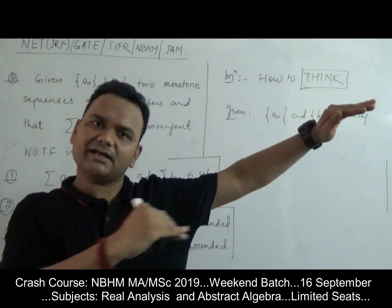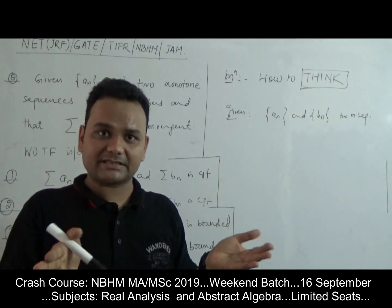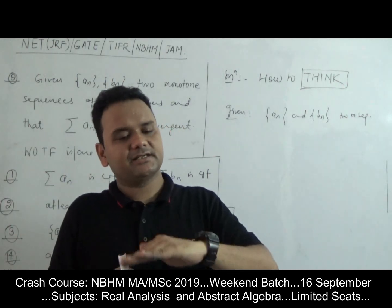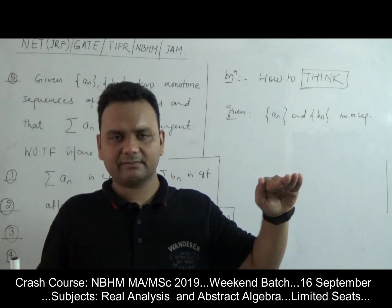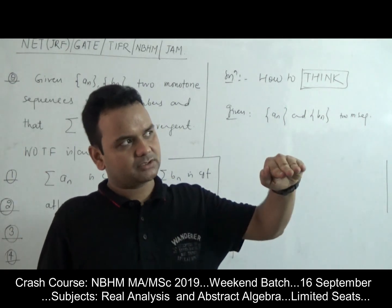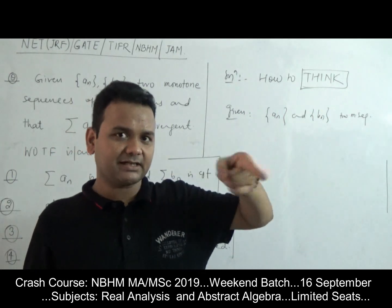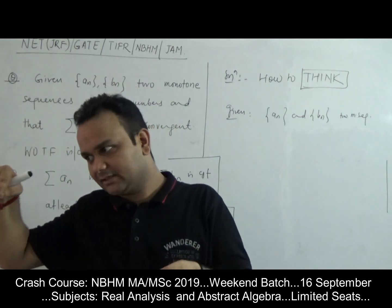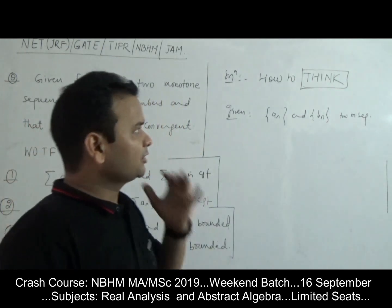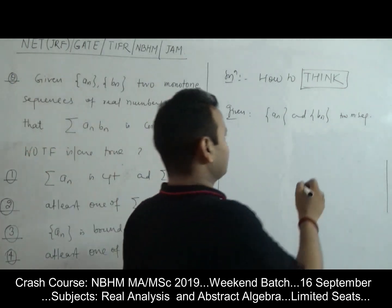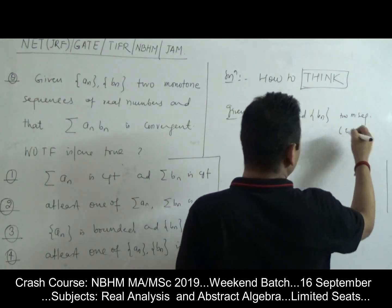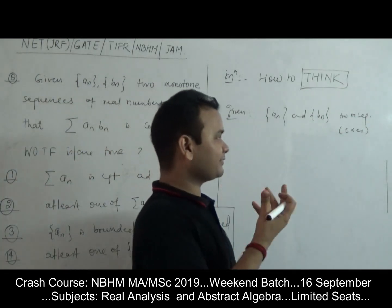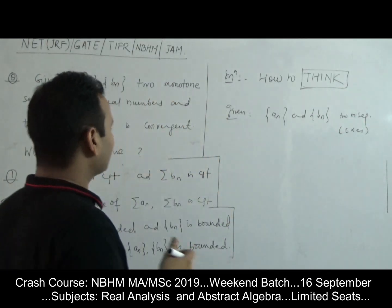A monotone sequence is either monotonically increasing or monotonically decreasing, or constant. It keeps going up, or keeps going down, or stays constant — it cannot go up and then come down. This is the definition of a monotone sequence and you should read about it if you don't know it, though it is a very basic term in mathematics.